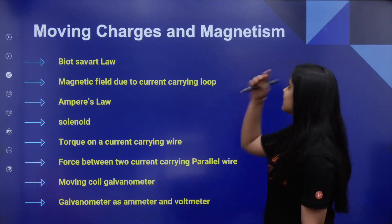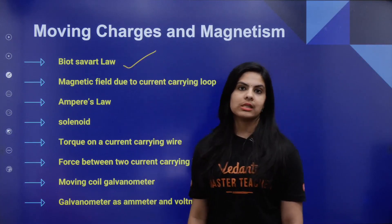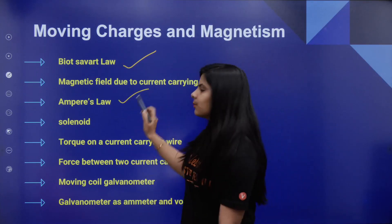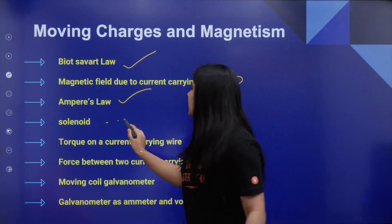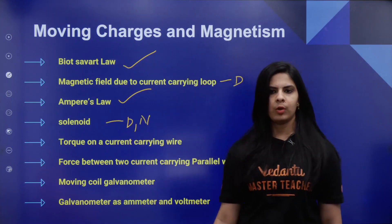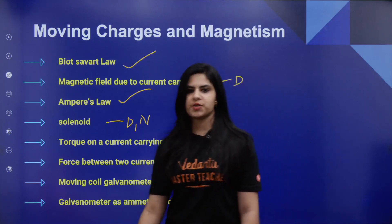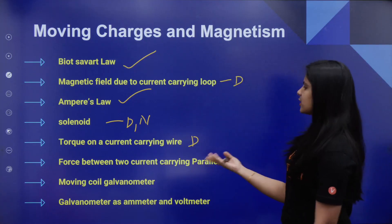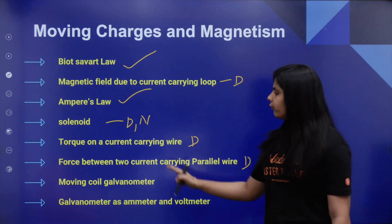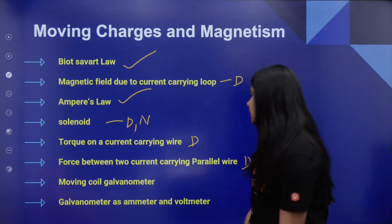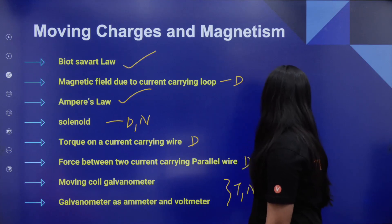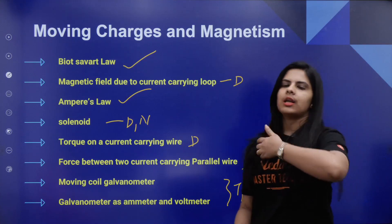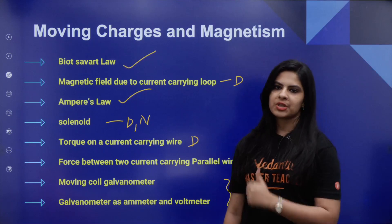In the third chapter, Moving Charges and Magnetism, we are going to cover statement-based questions and derivations. Solenoid — derivations and numericals. Current-carrying wire — that is a derivation part. Force between two current-carrying conductors — that is also a derivation part.